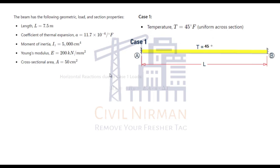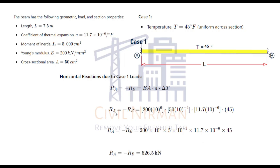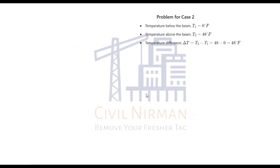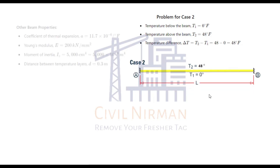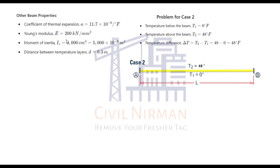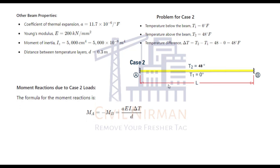For Case 2, we have a temperature variation between the top and bottom of the beam. The temperature at the bottom of the beam is 0 degrees and at the top is 48 degrees. The length remains 7.5 meters, and the Iz, E, and alpha values are specified. To calculate the moment for this case, the equation is α·E·Iz·ΔT divided by the depth d. The temperature difference ΔT here is 48 degrees.